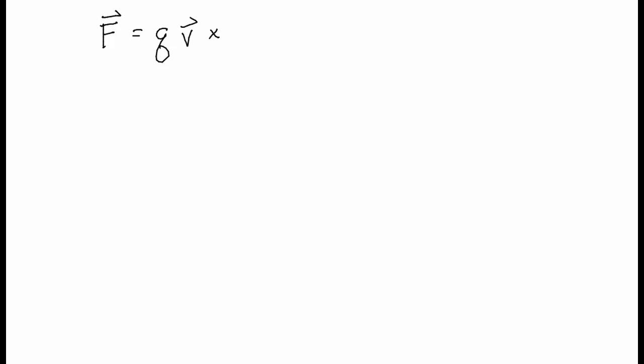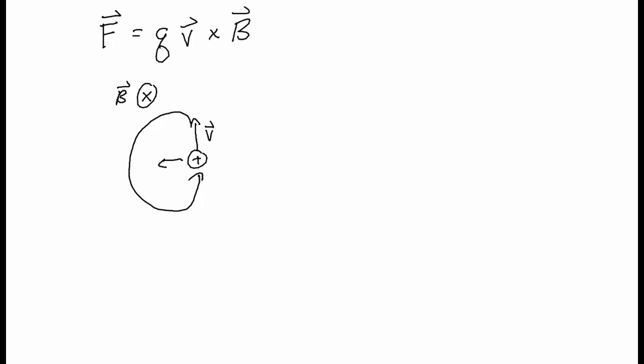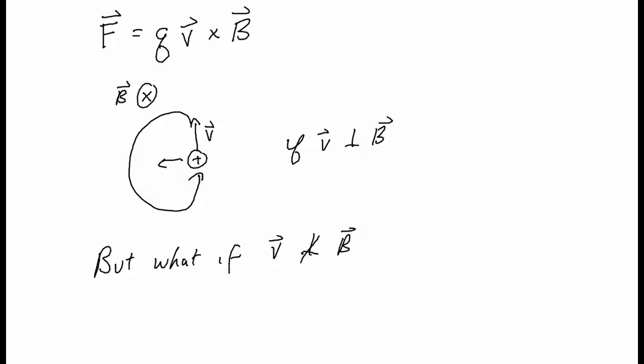In class, we discussed that if you place a charge in a uniform magnetic field, it feels a force equal to V cross B. And if you have a situation where the magnetic field is perpendicular to the velocity of a charge, it's going to feel a force and move in a circle. But what if V is not perpendicular to B? That is, what if V has a component perpendicular to B but also a component which lies along B? Let's consider that next.